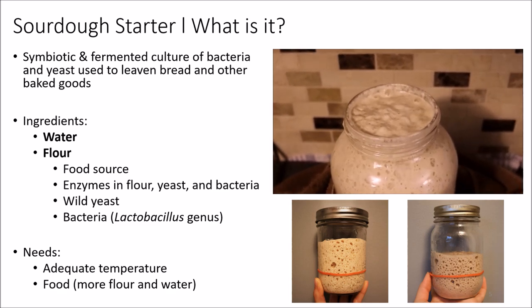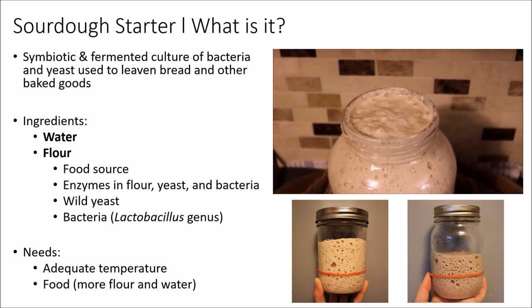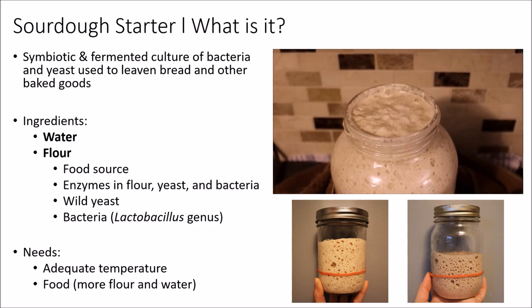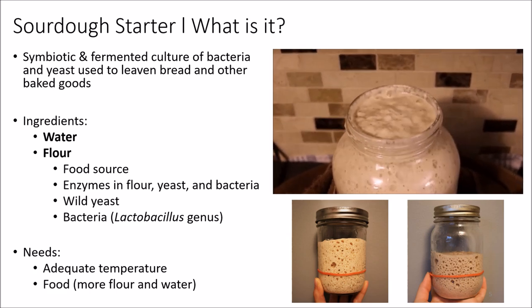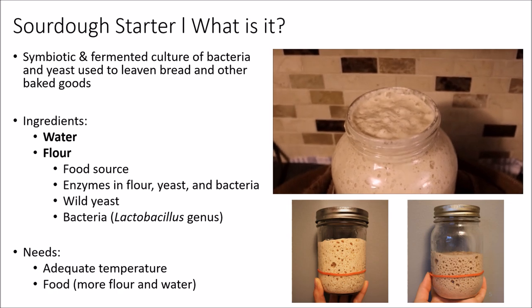These are called wild yeast to differentiate them from commercial yeast. Wild yeast are found on the flour or even in the environment — from the air, from your hands, or other aspects of the environment. Most bacteria found in a sourdough starter also come from the environment or from the grain of the flour itself, usually from the lactobacillus genus. A sourdough starter needs adequate temperature — around 85 to 105 degrees Fahrenheit — plus regular feeding with flour and water, since the yeast and bacteria use up the food source and need to be replenished.